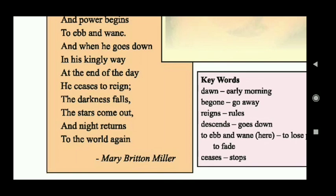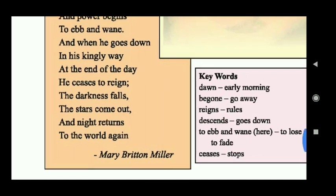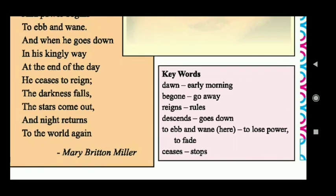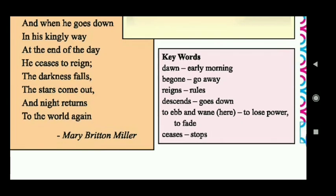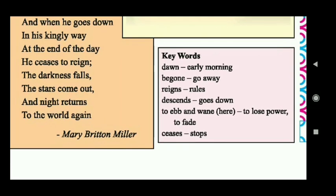So this is a beautiful poem, Supremo, written by Mary Britton Miller. What are the key words? Dawn means early morning. Be gone means go away. Reigns means rules. Descends means goes down. To ebb and wane means to lose power, to fade. And ceases means stops.